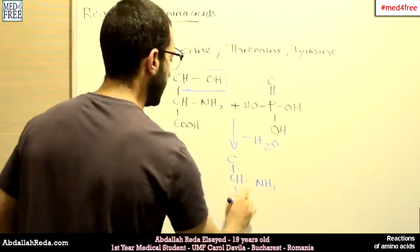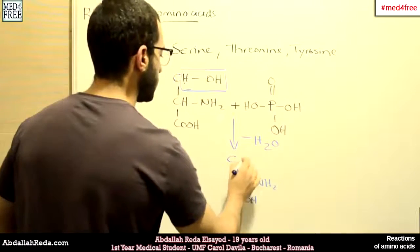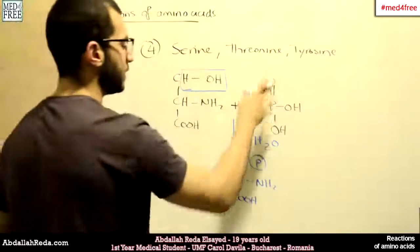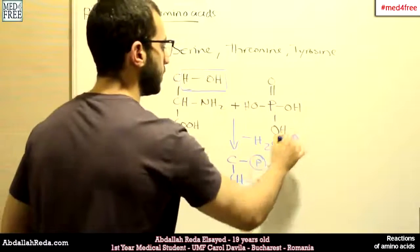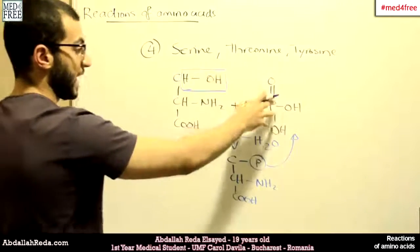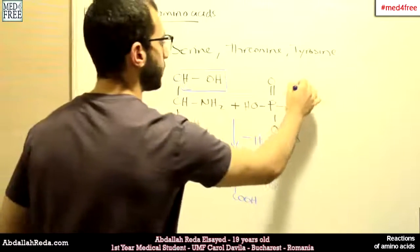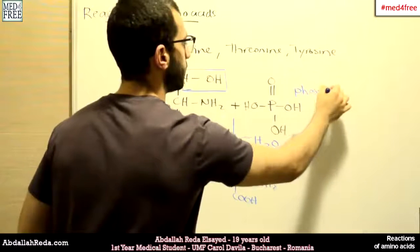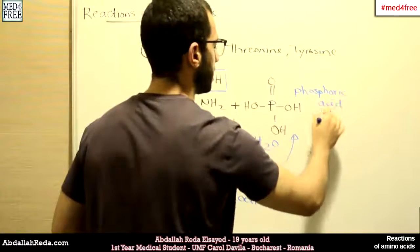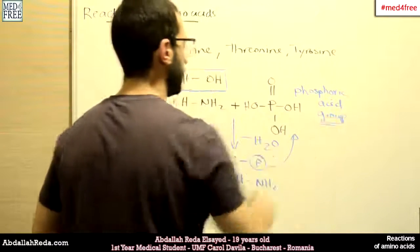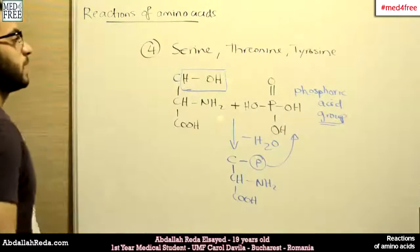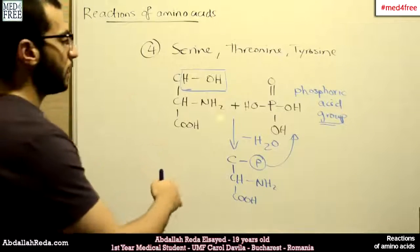And to make it easier, we can just write the group like this, a P in a circle. This is indicating that we're talking about a phosphorus group, a phosphoric acid group, to be more specific. A P in a circle. So these are the reactions.